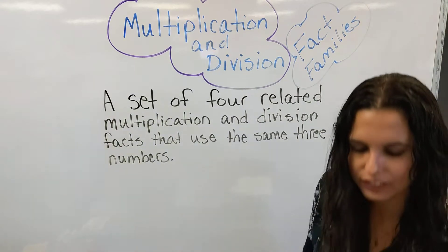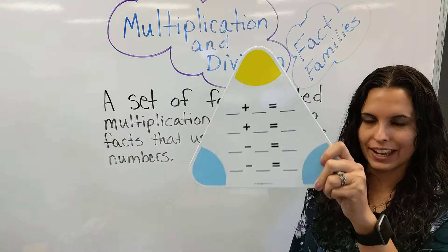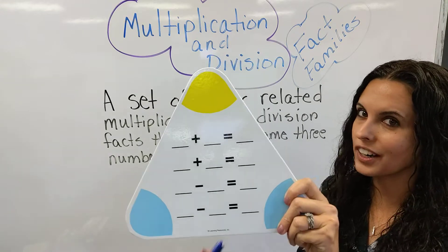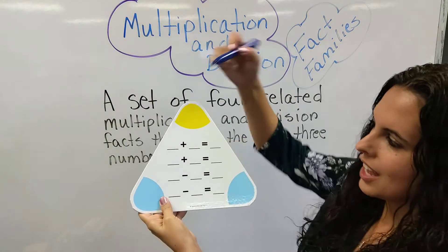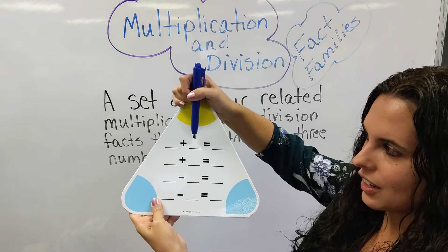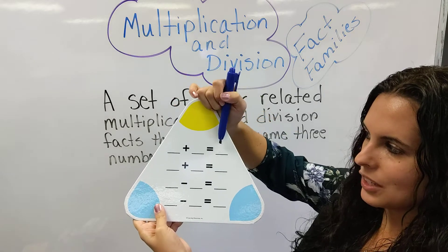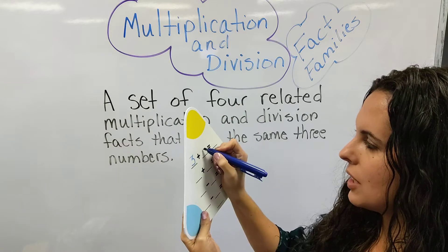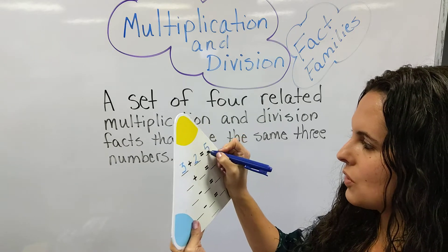So I have a fact family house right here. This is your triangle and this is for addition and subtraction. So you would have your addition fact here and it equals. So let's do a practice one. Let's do 3 plus 2 and that equals 5.